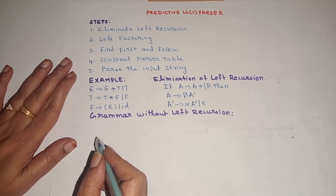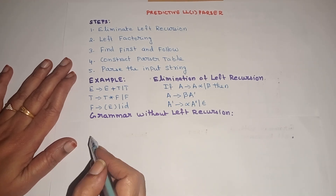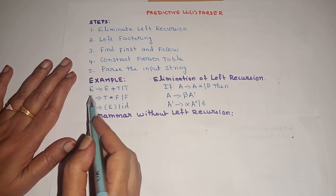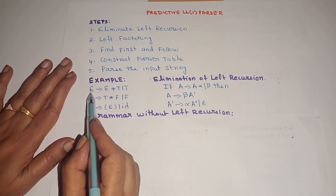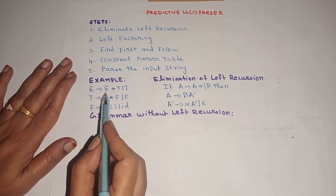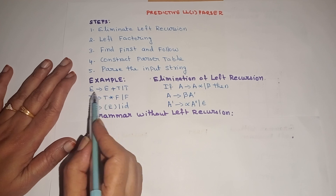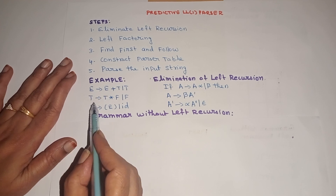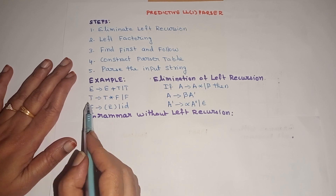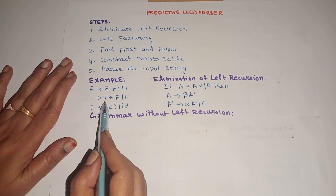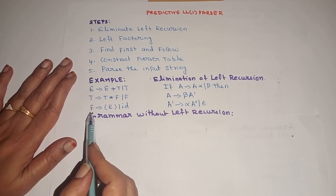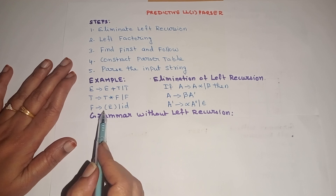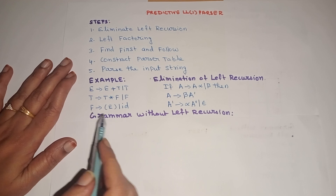Now let us write the grammar without left recursion. For production number 1, on the left hand side we have E and the right hand side first symbol is also E, so this is left recursive. For the second production, left hand side is T and right hand side first symbol is also T, so this is also left recursive. The third one is not left recursive because the left hand side and first symbol in the right hand side are not similar.